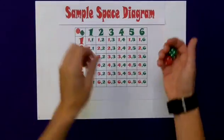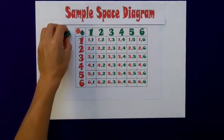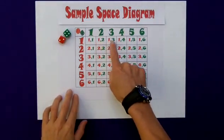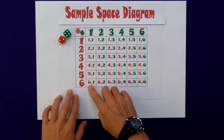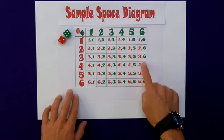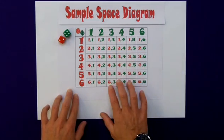This is our sample space diagram for throwing two dice. I've shown the individual scores in each box for the red and the green dice, but we can easily add the totals up. In fact, there are 36 of these different outcomes shown on this diagram.